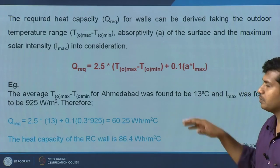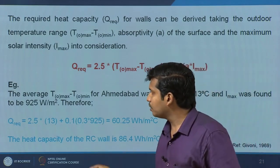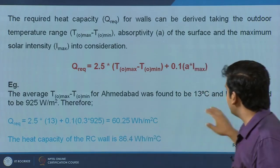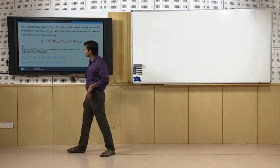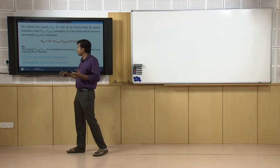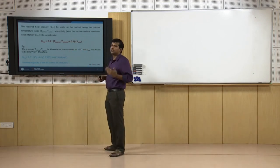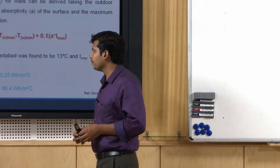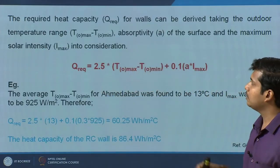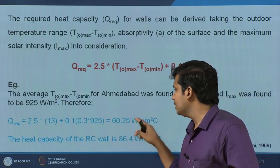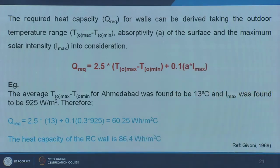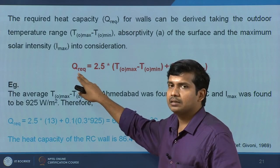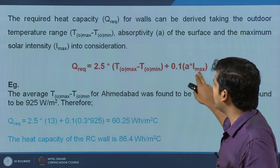Substituting values for Ahmedabad — a hot and dry climate per the national building code — we took a day where ambient temperature delta T was 13 degrees and solar radiation I_max was 925 watts per meter square. With a wall surface absorption of 0.3 (a white-painted surface reflecting most solar), the required heat capacity Q is around 60 watt-hour per meter square per degree centigrade. As solar radiation intensity goes up, required heat capacity increases.